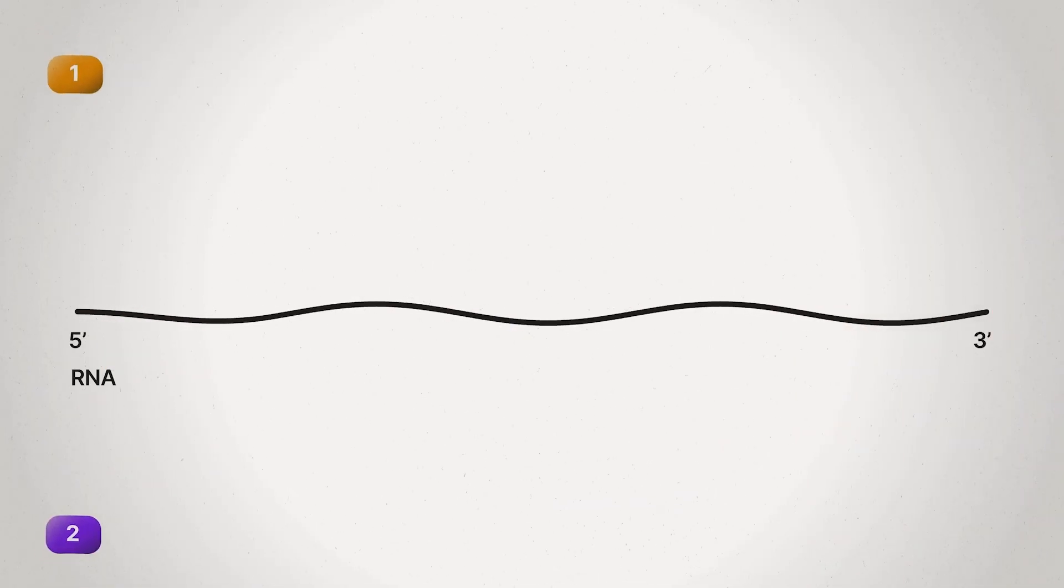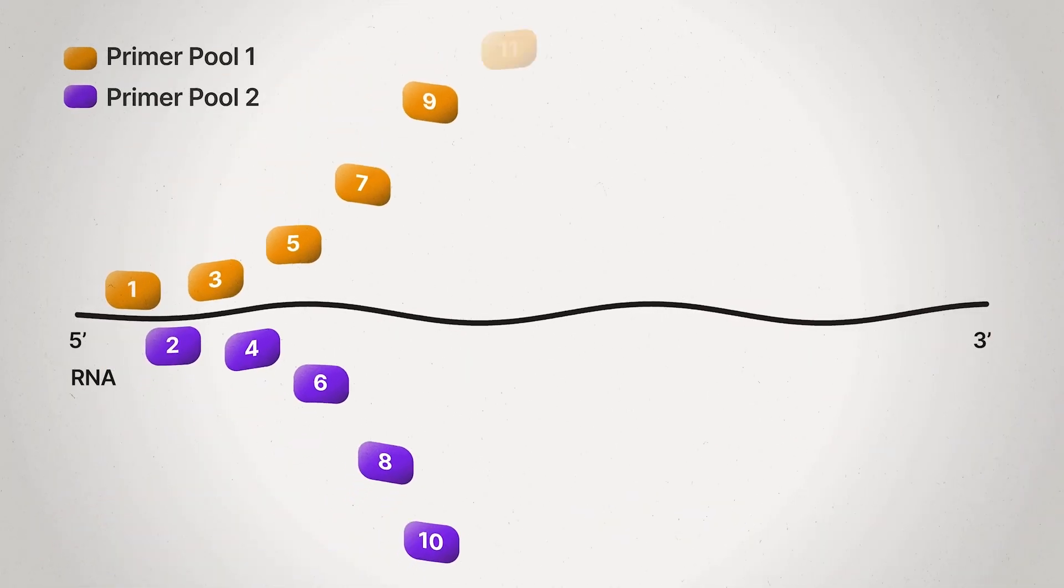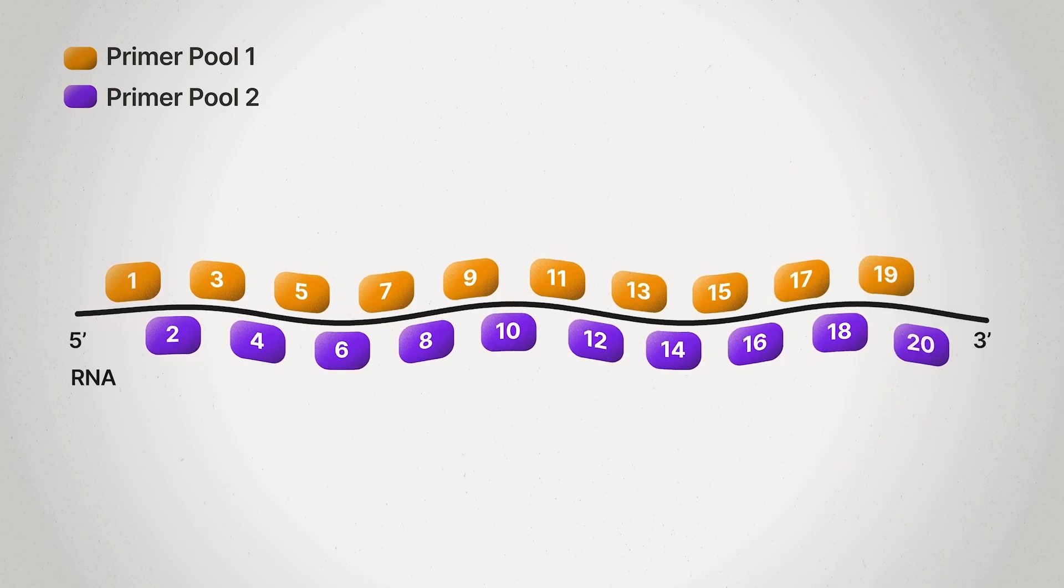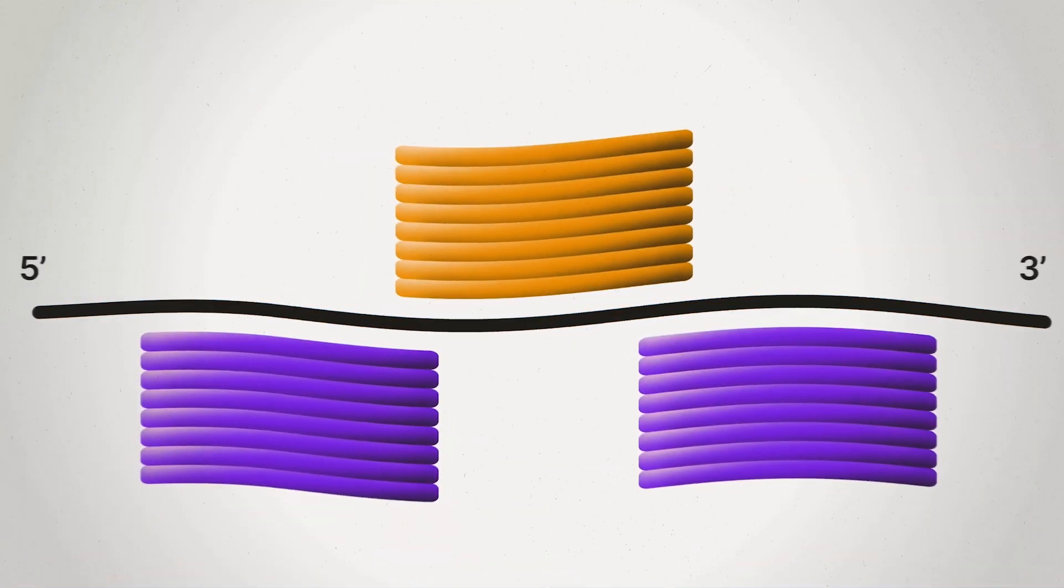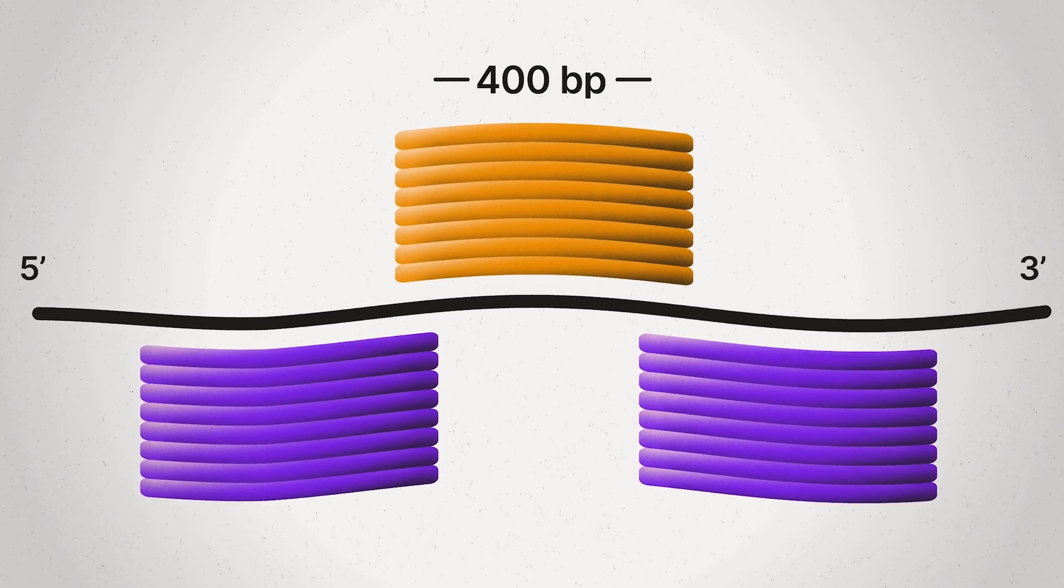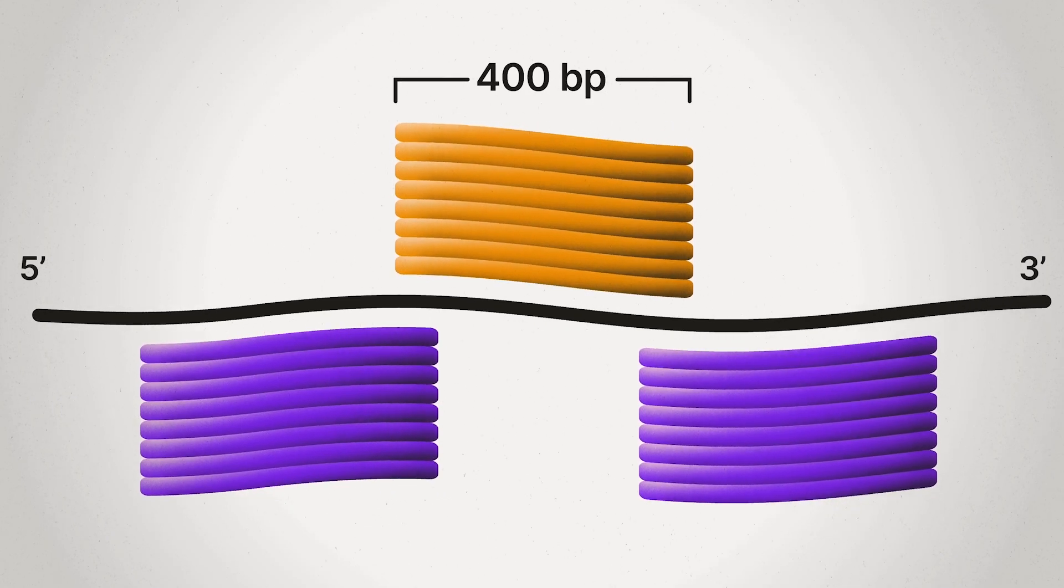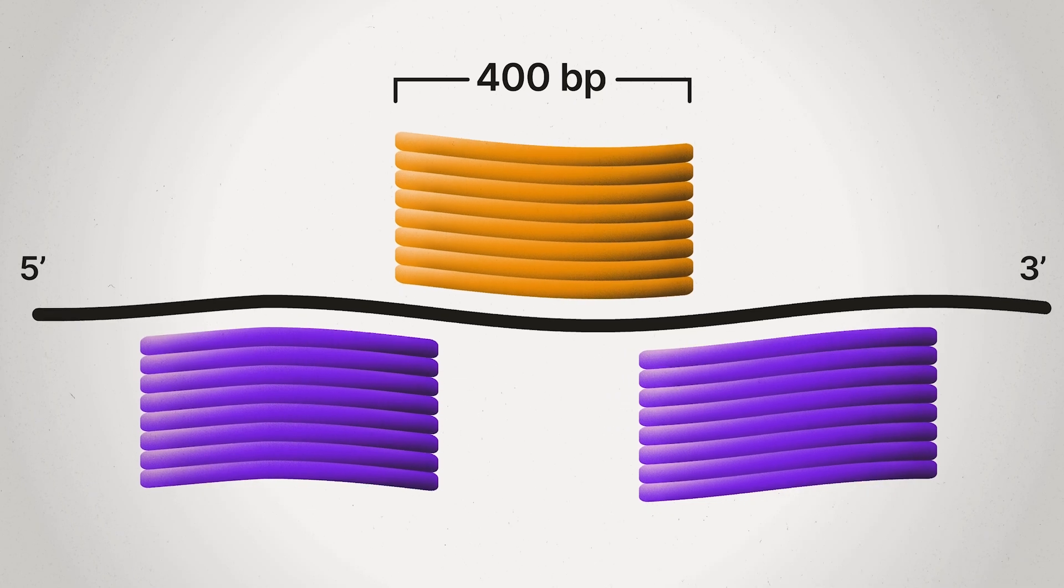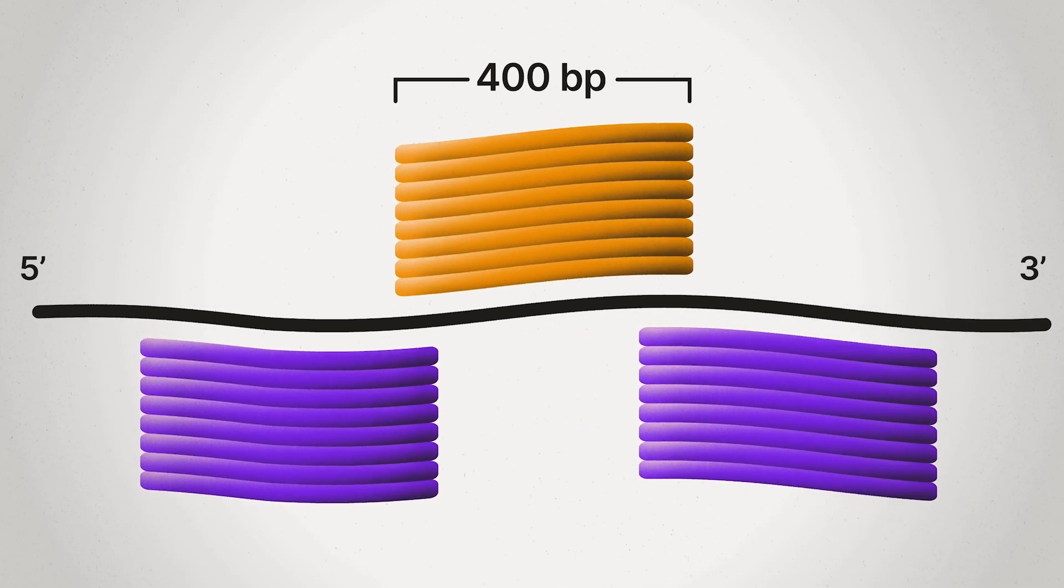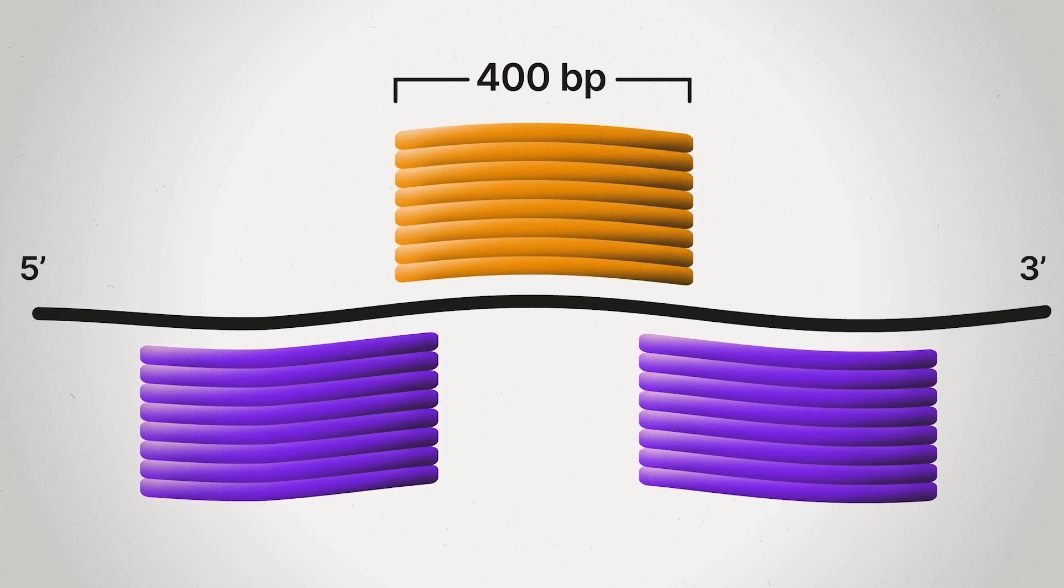Primal Scheme works by taking an input reference sequence and generating two primer pools that will generate amplicons that overlap in the regions of interest. Amplicon size can vary, but for the IMAP chemistry, we recommend 400 base pairs. These relatively short amplicons offer robust results in the face of any secondary structures that occur in the template RNA or any degradation that occurs in the sample.